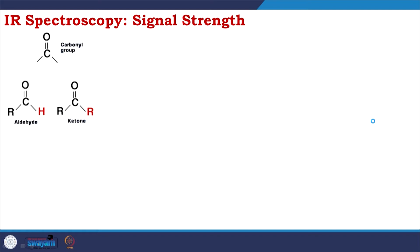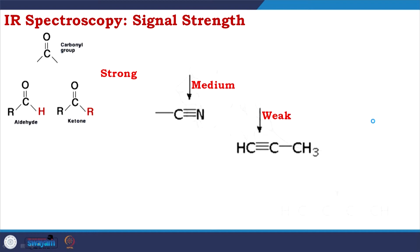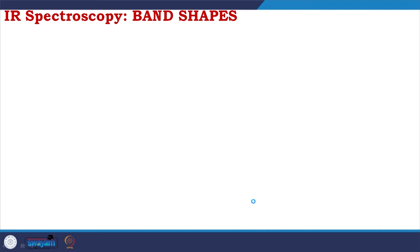Carbonyl groups like aldehyde and ketone give strong bands. C triple bond N gives medium bands. C triple bond C gives weak bands, and symmetric C triple bond C with methyl groups on both sides gives no observable band in IR spectroscopy. Infrared band shapes come in two common forms: narrow and broad.